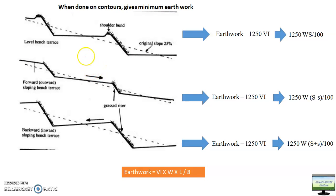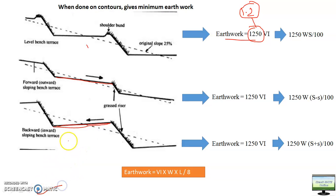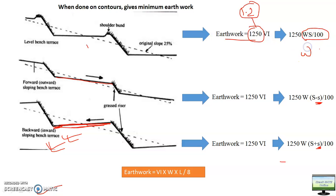This was shown earlier for earthwork — from where the value 1250 is coming. If you don't know, please watch video 1.2. Now, for inward sloping and outward sloping terraces: outward sloping requires discharging extra water, so a longitudinal channel is needed, meaning earthwork is higher. When earthwork is higher you add the slope value. So the formula WS/100 stays the same, but for outward it becomes 100 minus S and for inward it becomes 100 plus S.